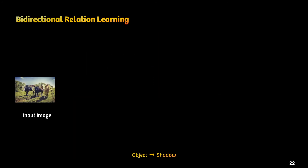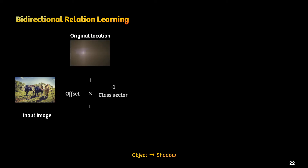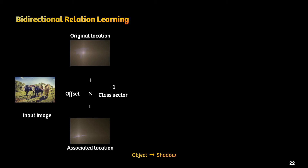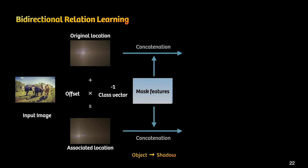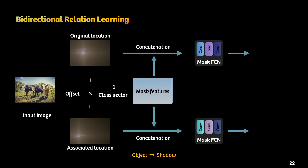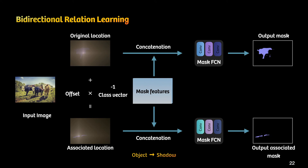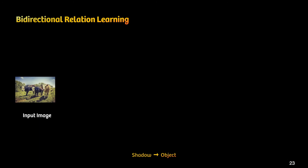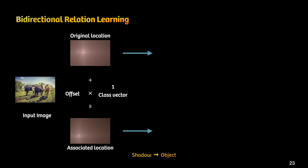Here we show how to learn the paired shadow instance from the object instance. We compute the associated location to indicate the center of the paired shadow instance by using the learned offset vector and class factor. Then we concatenate the location and mask feature, and feed them into MaskFCN to generate the object mask and associate the shadow mask. Similarly, we show how to learn the paired object instance from the shadow instance in the same way.